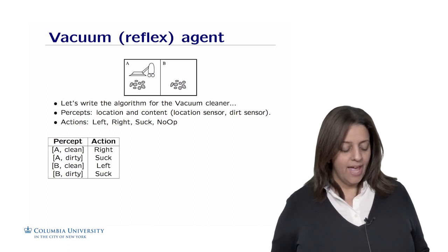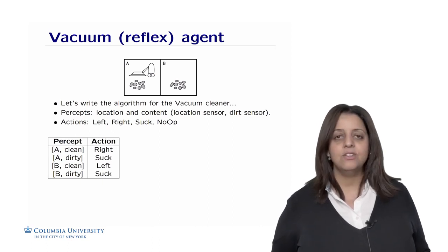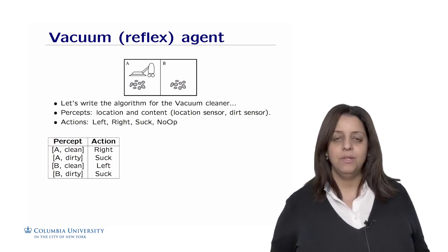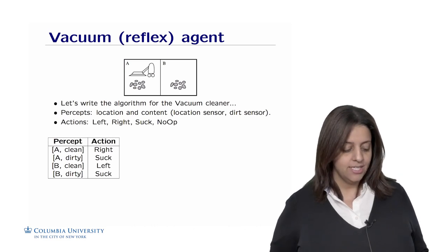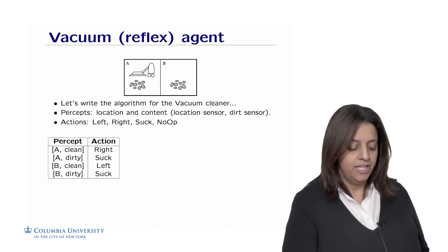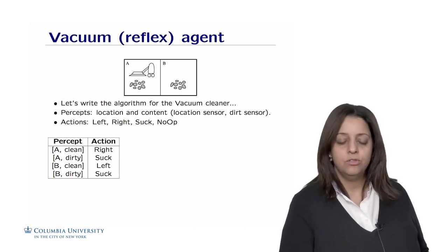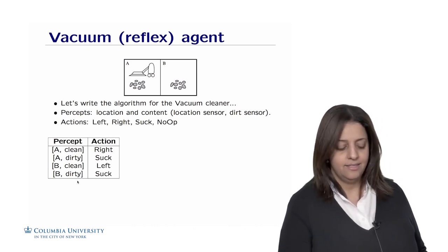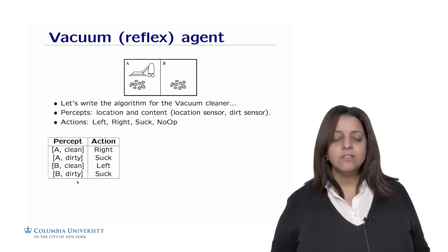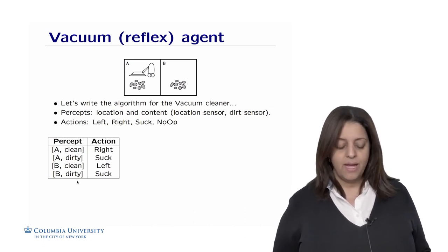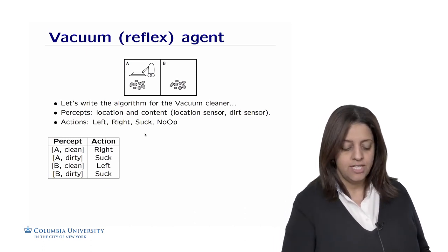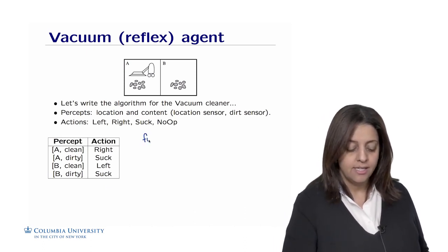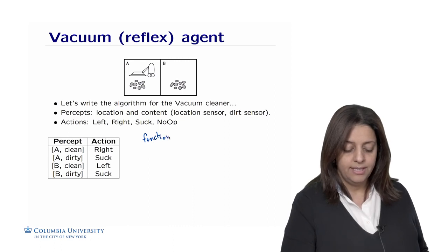We can write a table in which we have the percepts and the corresponding actions. For example, if in room A and clean, go right; if A is dirty, suck; and so on. Let's start by writing the function that actually performs the vacuum cleaning.